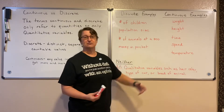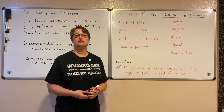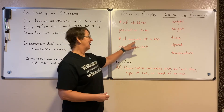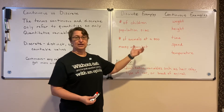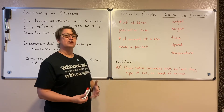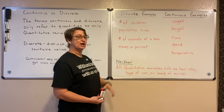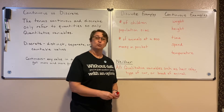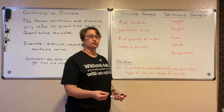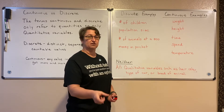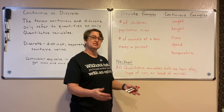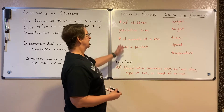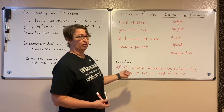The population size of a town is the same way — you can actually count the people there. The number of animals at the zoo — again, those are distinct, countable numbers. And the money in your pocket: you can take out your money, and while it might be three dollars and four cents, making it a decimal, it is still countable and a distinct amount. So those are examples of discrete variables.